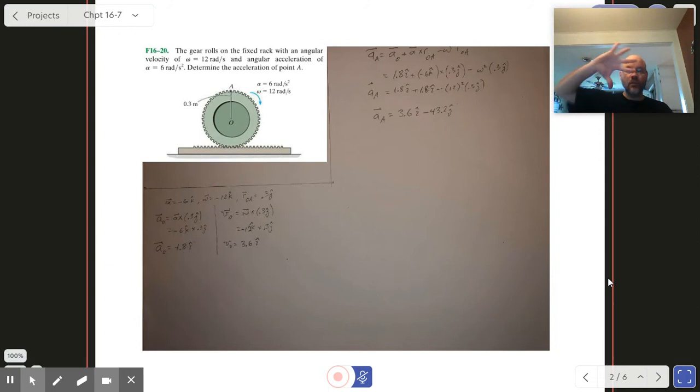The gear is rolling across, and it's important to know that the point of contact with our gear right there has a velocity of zero. That's got a velocity of zero.